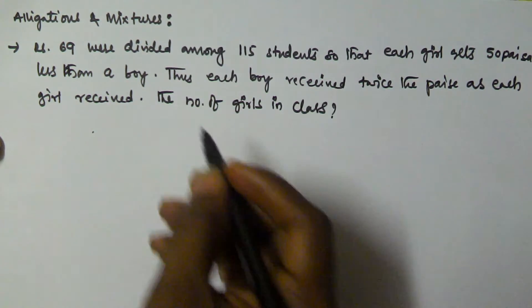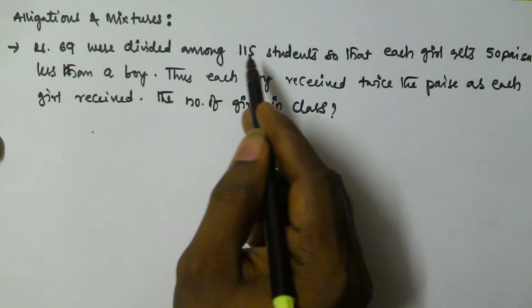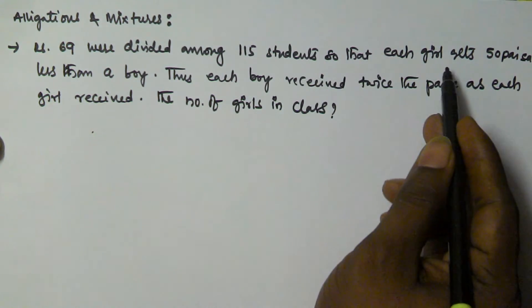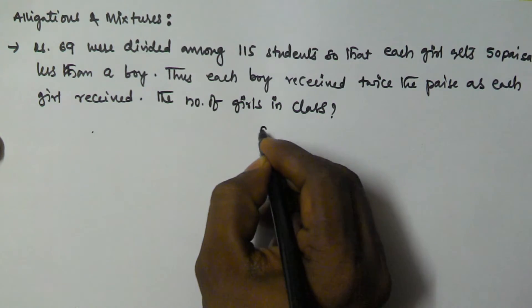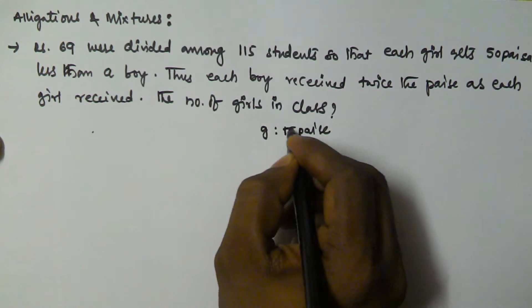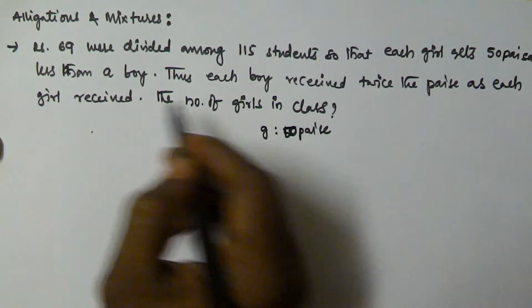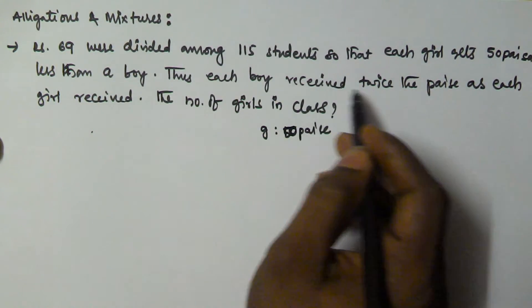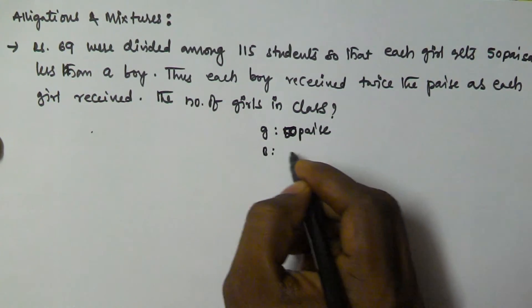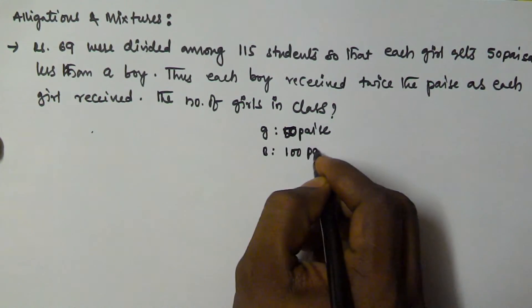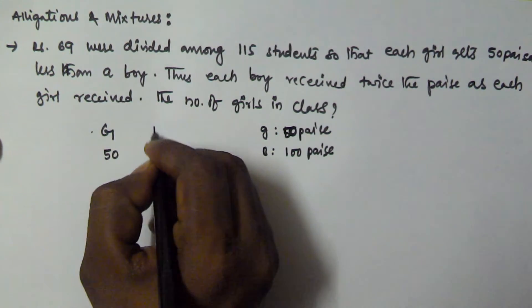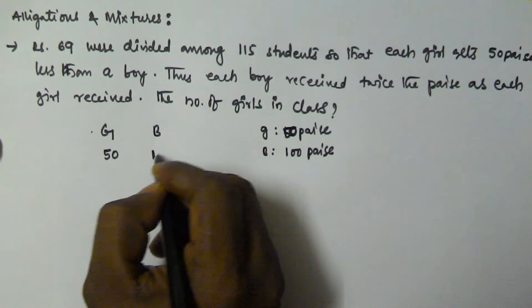So that means rupees 69 were divided among 115 students so that each girl gets 50 paisa and each boy received twice the paisa as each girl received. That means the boy is getting 100 paisa and the girl is getting 50 paisa.